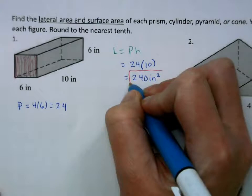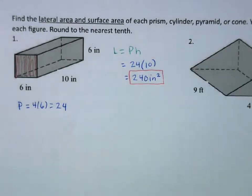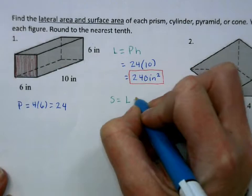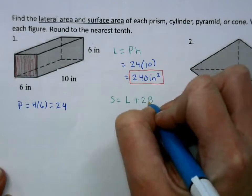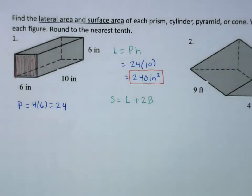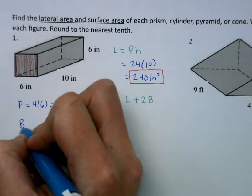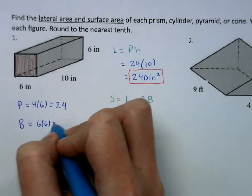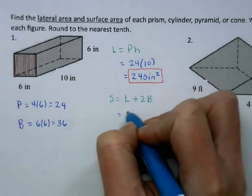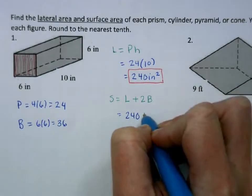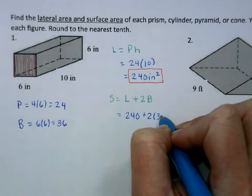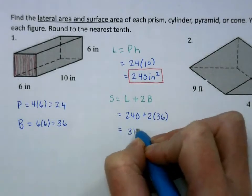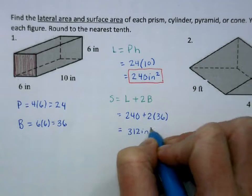For the surface area, we're going to have the lateral area plus 2B, where B is the area of the base — the area of the square, which is 6 times 6, so we get 36. So this will be 240 plus 2 times 36, which is 312 inches squared.